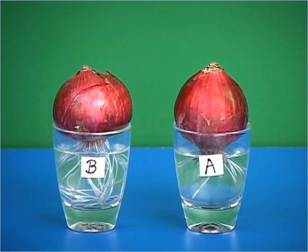From the above activity, it can be concluded that root tip of the onion has a specific type of tissue called meristematic tissue which causes the growth of a plant.